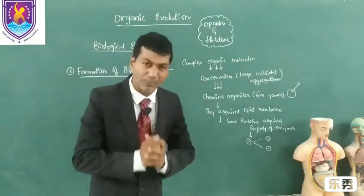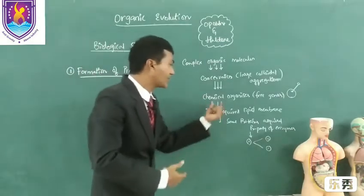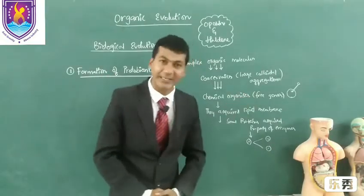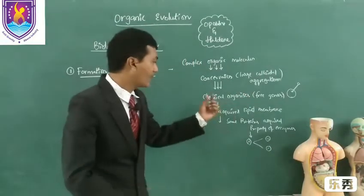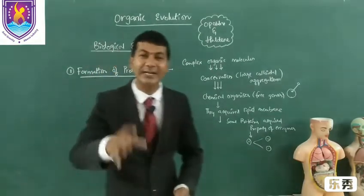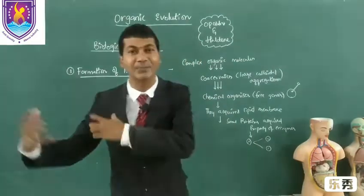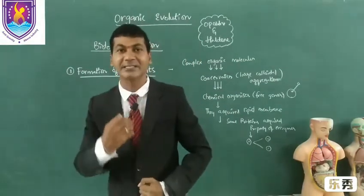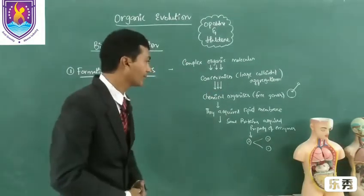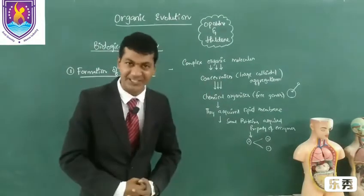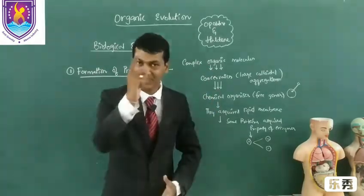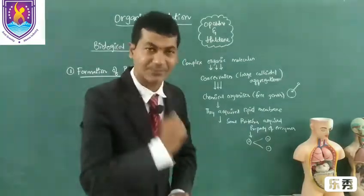Among the coacervates, a few of the droplets become chemical organizers, which we call pre-genes. Chemical organizers attract molecules from the surroundings. These pre-genes later acquired a membrane around them, which we call the cell membrane or plasma membrane.